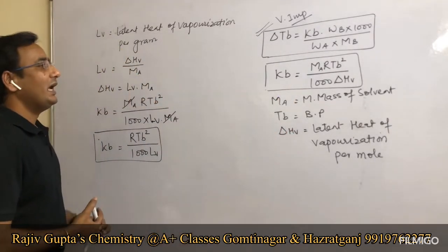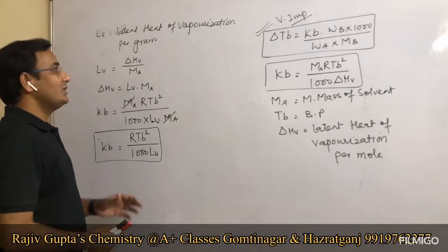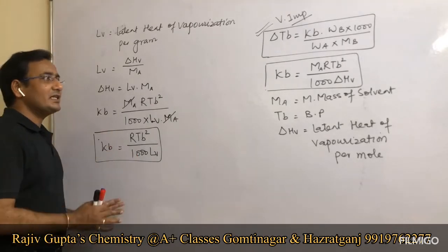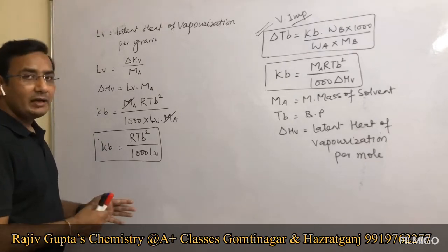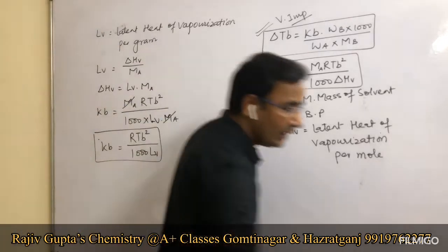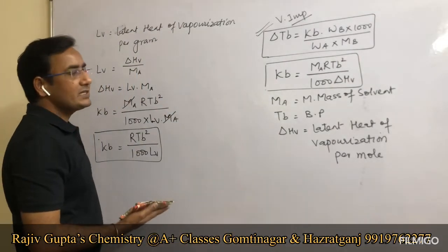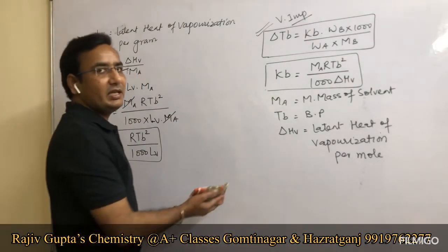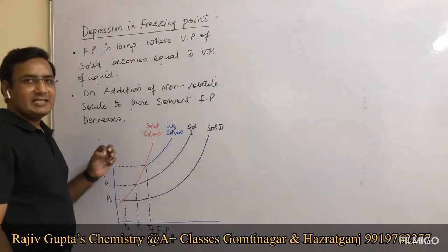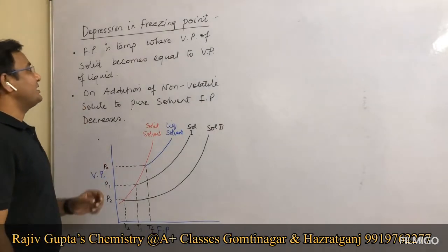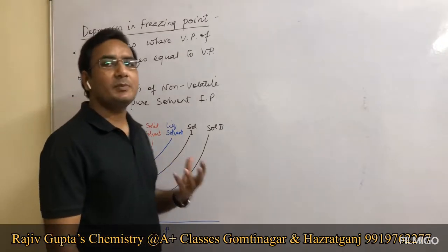This completes the topic of elevation in boiling point. The next colligative property we will discuss is depression in freezing point. Let us first understand what freezing point is.